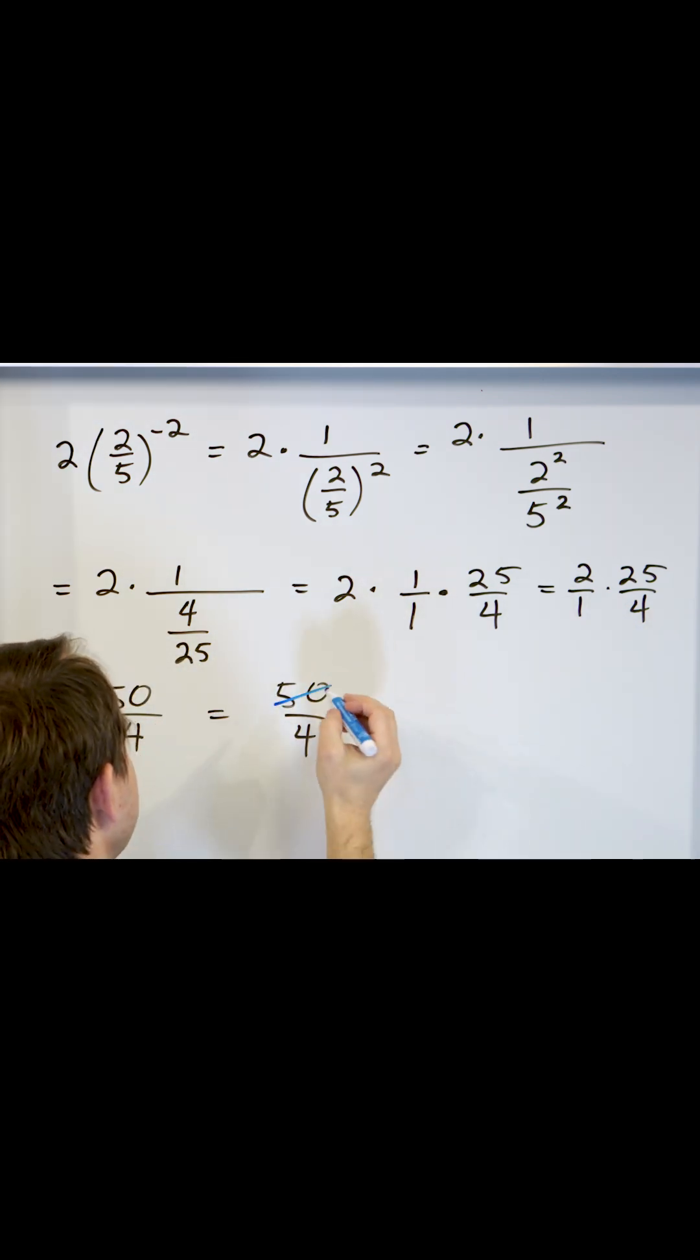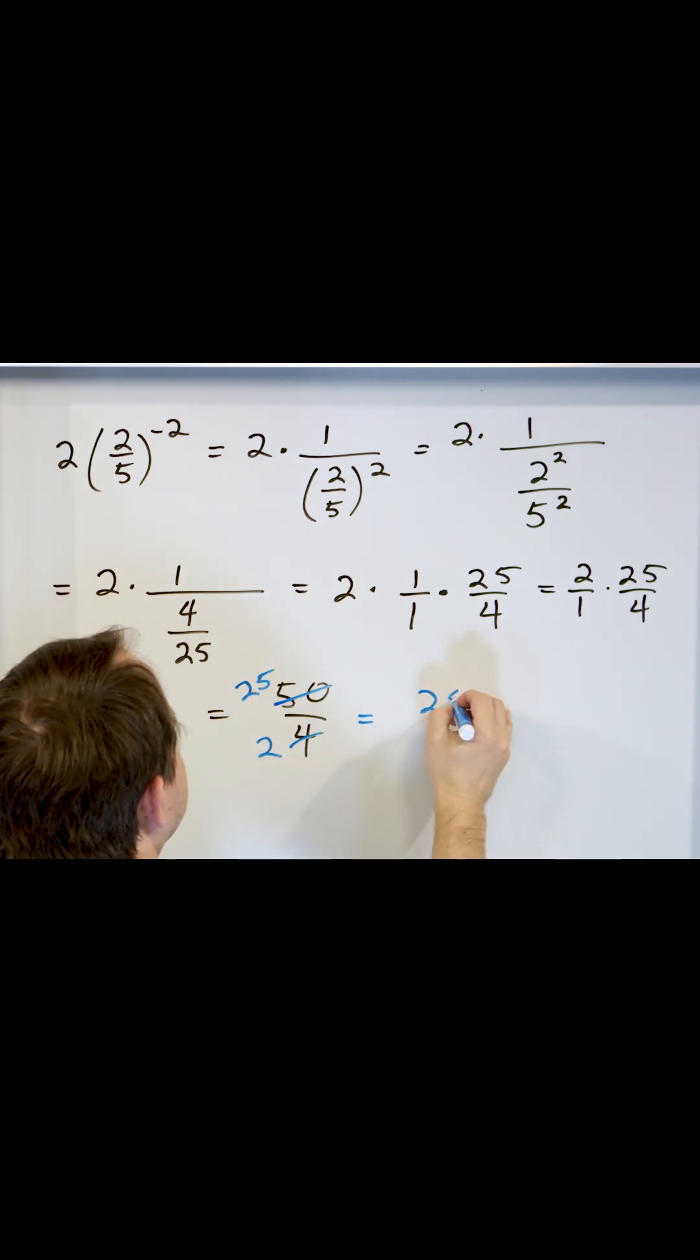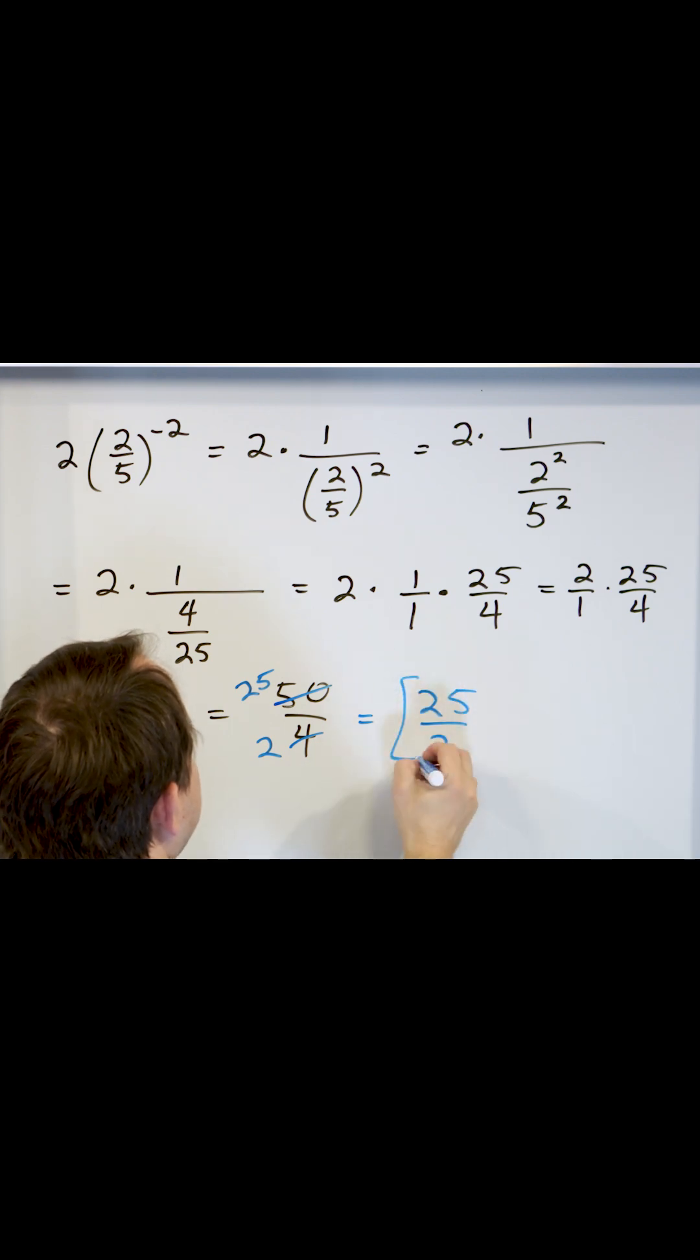50 divided by 2 is 25. 4 divided by 2 is 2. So 25 over 2. Final answer.